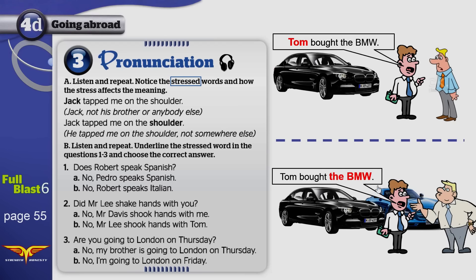Did you notice that? I said this in a different way. He said, 'Tom bought the BMW.' Now, BMW is stressed. Why? Because this man knows that Tom bought a car, but he doesn't know which car it is. So BMW is the important part. 'Which car did Tom buy?' This man said, 'Tom bought the BMW.' The BMW? It is stressed. Do you get it?